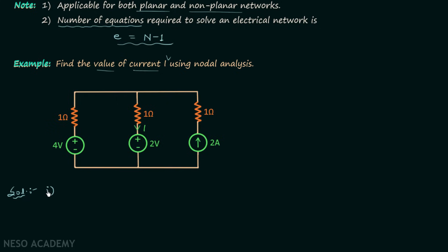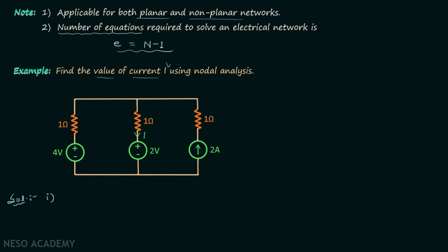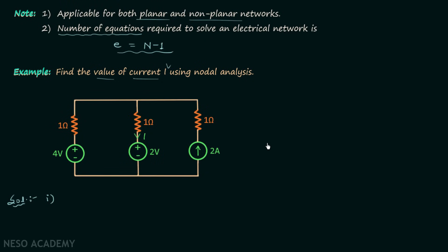According to step number one, we identify the total number of principal nodes — the common points where more than two elements are connected. We have one such point where three elements are connected, and one more principal node. So the total number of nodes is equal to two.